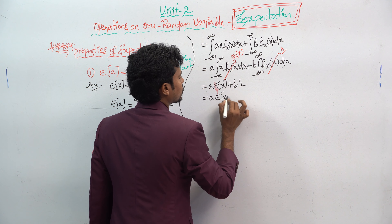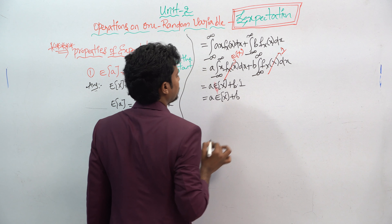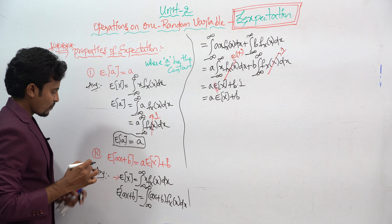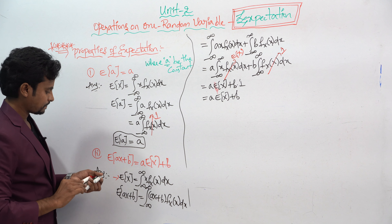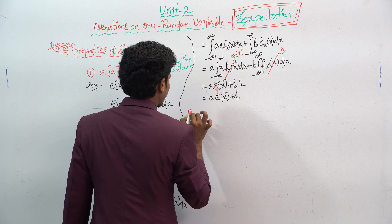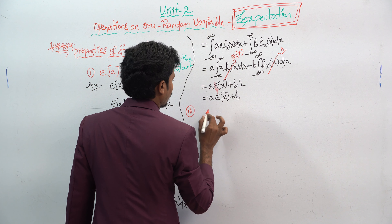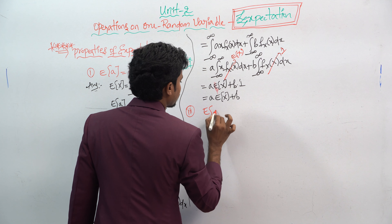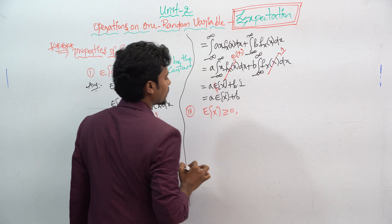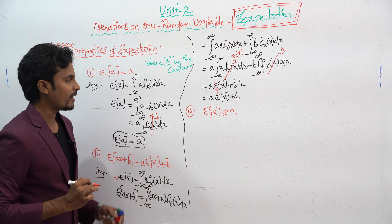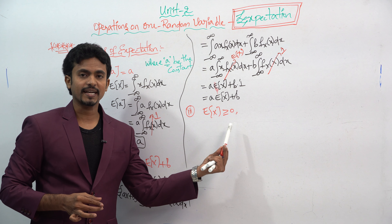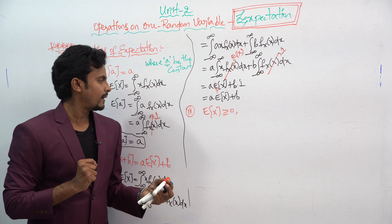And you already know the area under the density function equals 1. So this becomes a times E(x) plus b times 1, which equals a·E(x) + b. That is our answer for the second property.